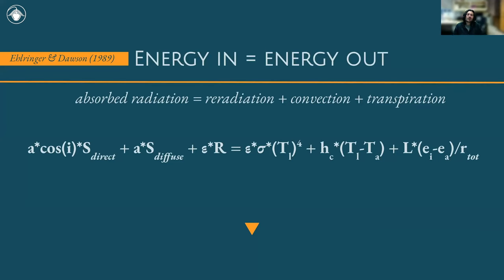That brings us to the leaf energy balance equation outlined by Erlinger and Dawson in 1989, which stipulates that energy in should equal energy out. If you watched Chernobyl on Netflix, you saw that as soon as energy leaving a system was not equal to what was coming in, you had a nuclear meltdown — not something we'd want to see with our plants. A leaf could remain cool even on a 100-degree day, and that's because of a regulation of energy acquired versus what is re-radiated, convected, and transpired.